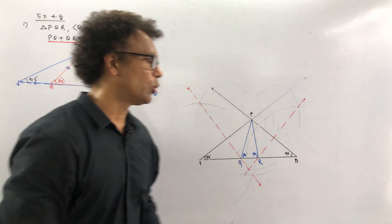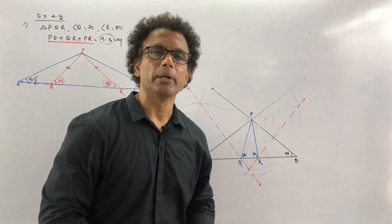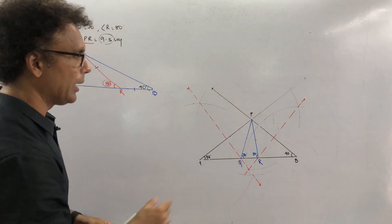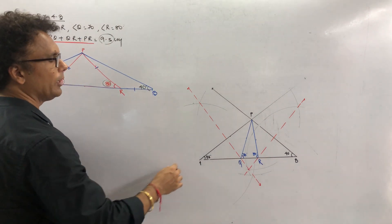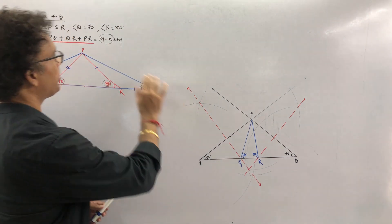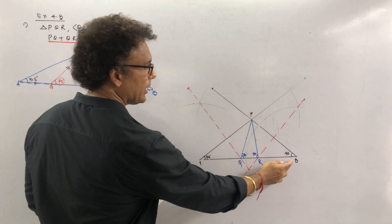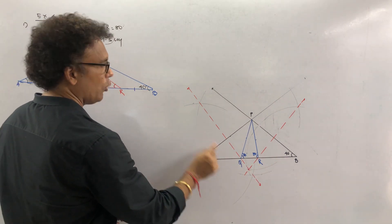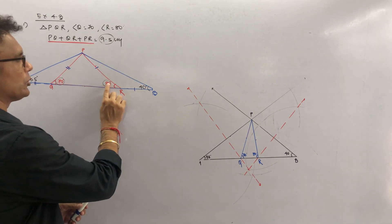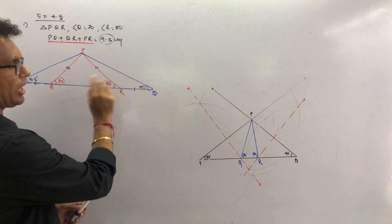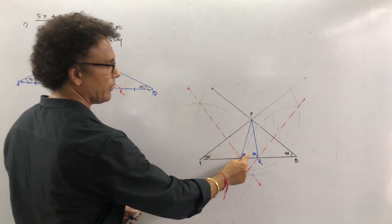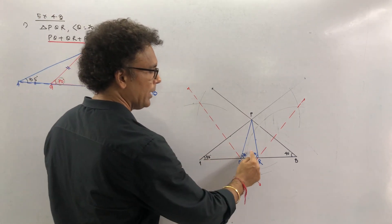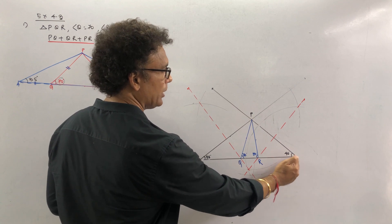This is how you draw the perimeter sum. Again I will repeat: whatever the perimeter is — the sum of all the sides — that will be your base AB. Whatever degrees are given at the base angles, take half of each degree. So 70° gives 35°, and 80° gives 40°.